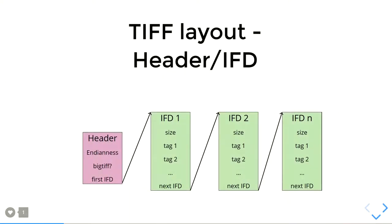So how does a TIFF or GeoTIFF look like? First off, you have the header. The header indicates the endianness and if it's a BigTIFF. TIFFs can only be four gigabytes in size — if they are larger, they have to be BigTIFF, which involves a small change in the file structure. Then you have the pointer to the first IFD. IFD stands for Image File Descriptor, which basically describes one image in the TIFF. At the end of each IFD you have a pointer to the next IFD and so on — basically a linked list of all the images within the TIFF.